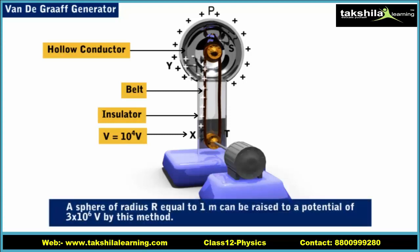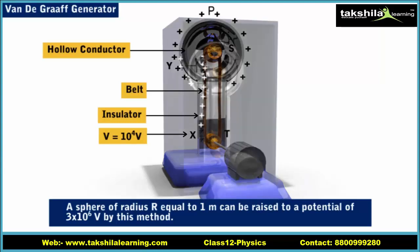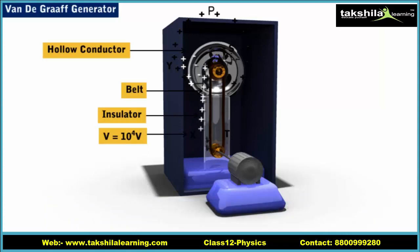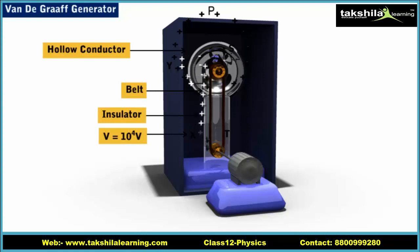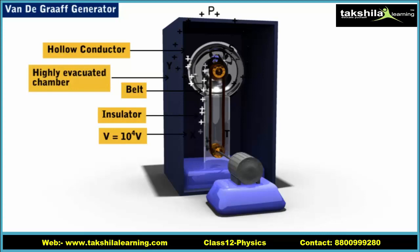A sphere of radius R equal to 1 meter can be raised to a potential of 3 × 10⁶ volts by this method. The potential can be further increased by placing the sphere in a highly evacuated chamber, in which case there will not be any air surrounding the sphere.